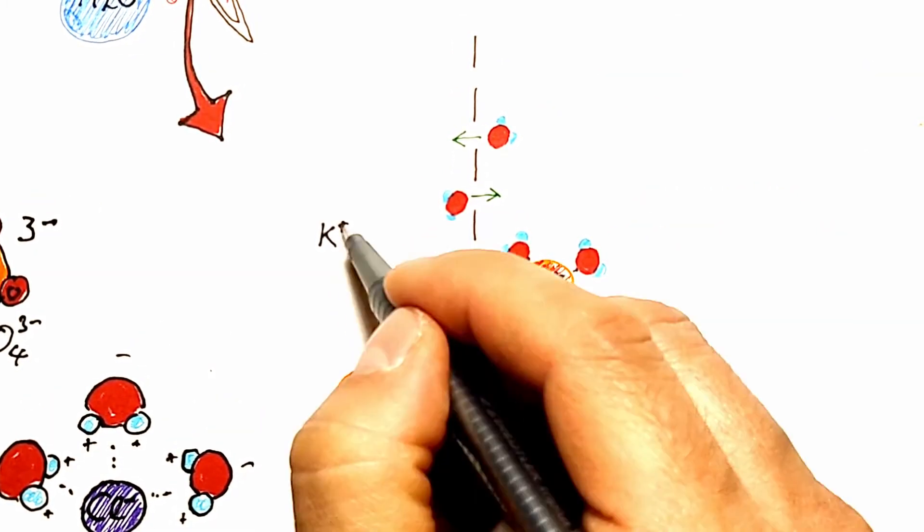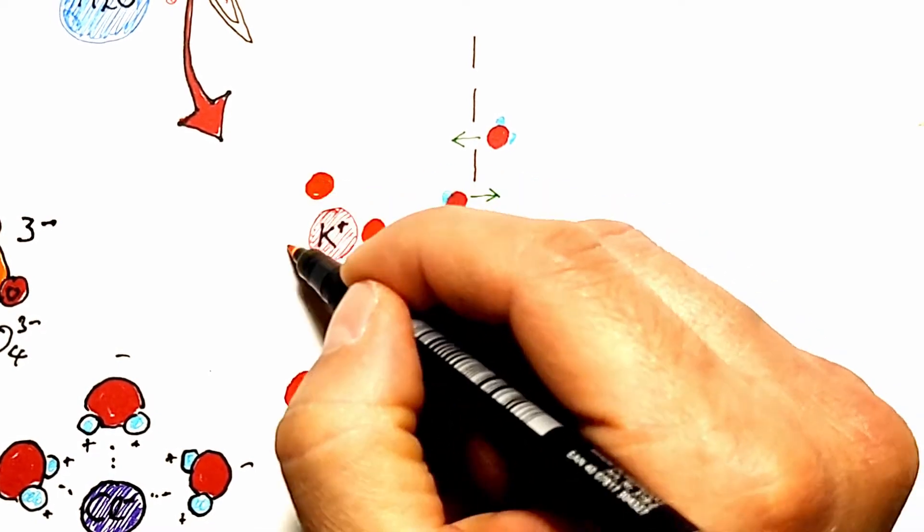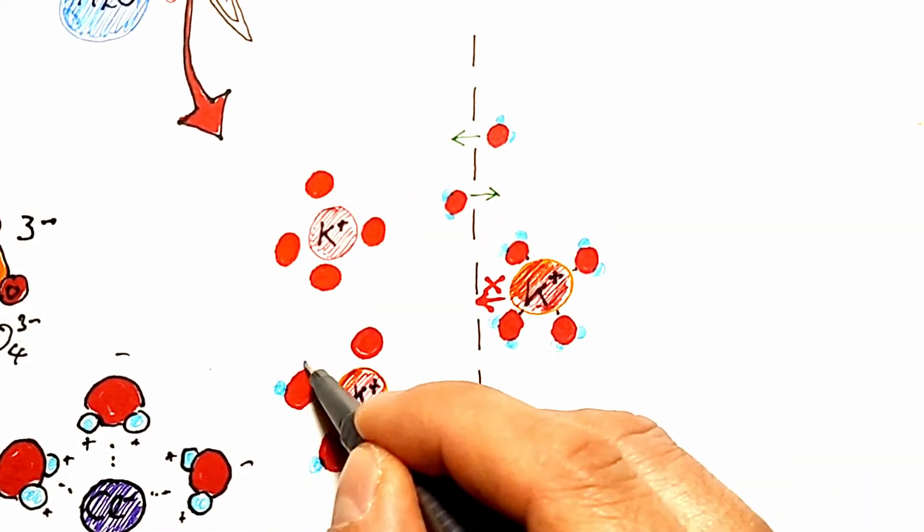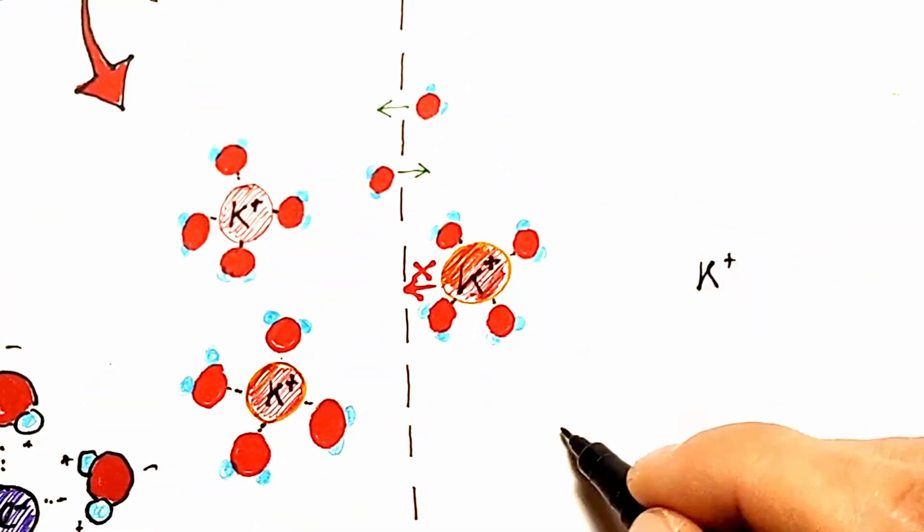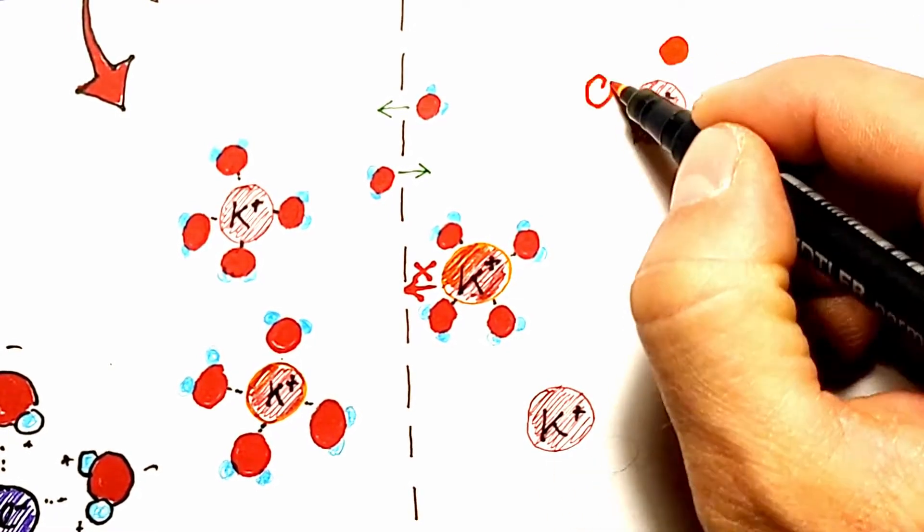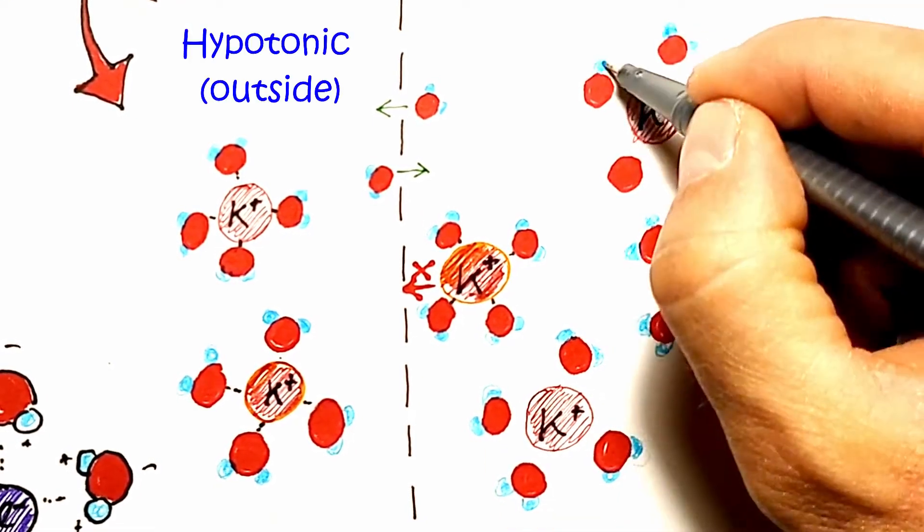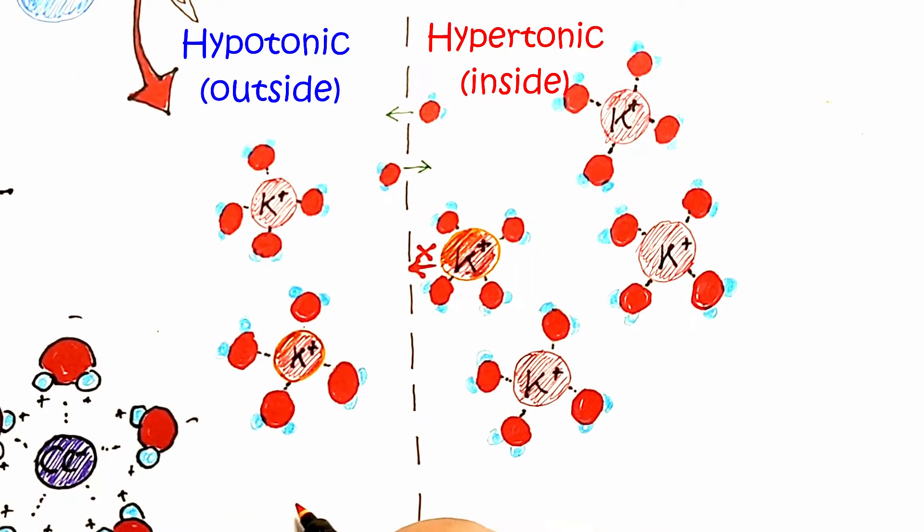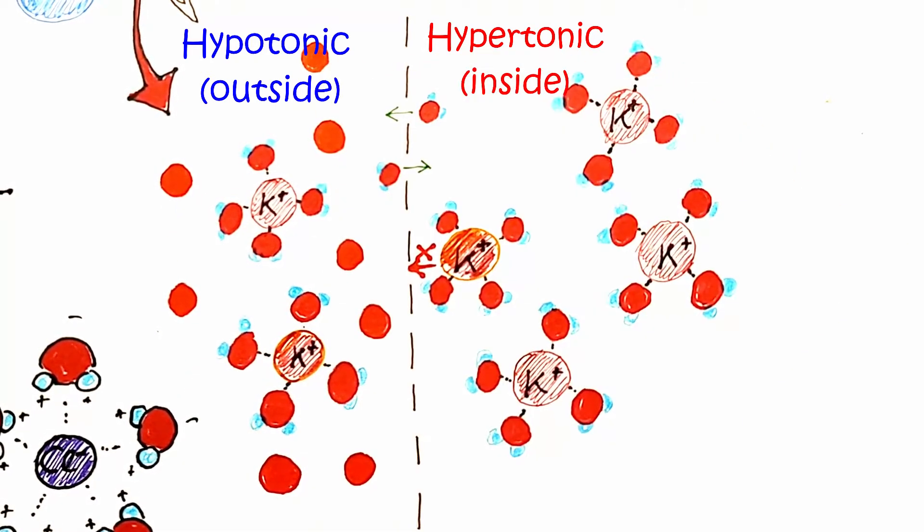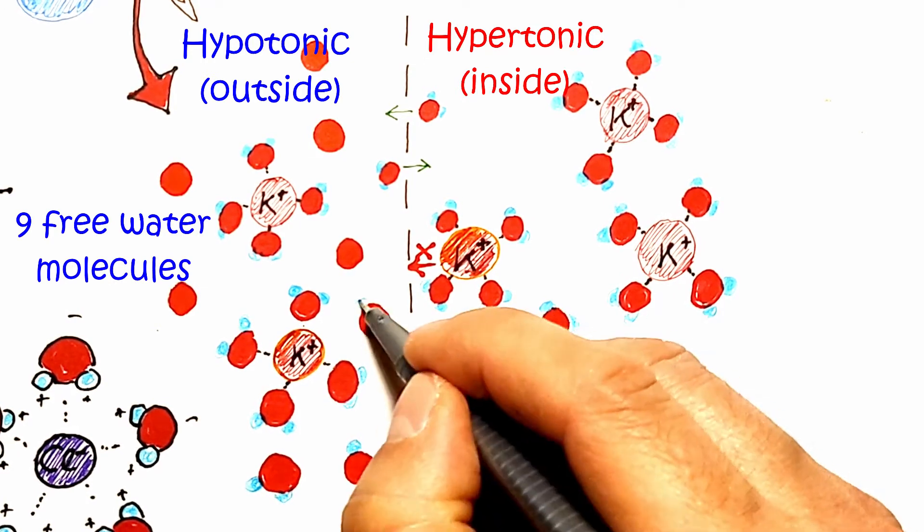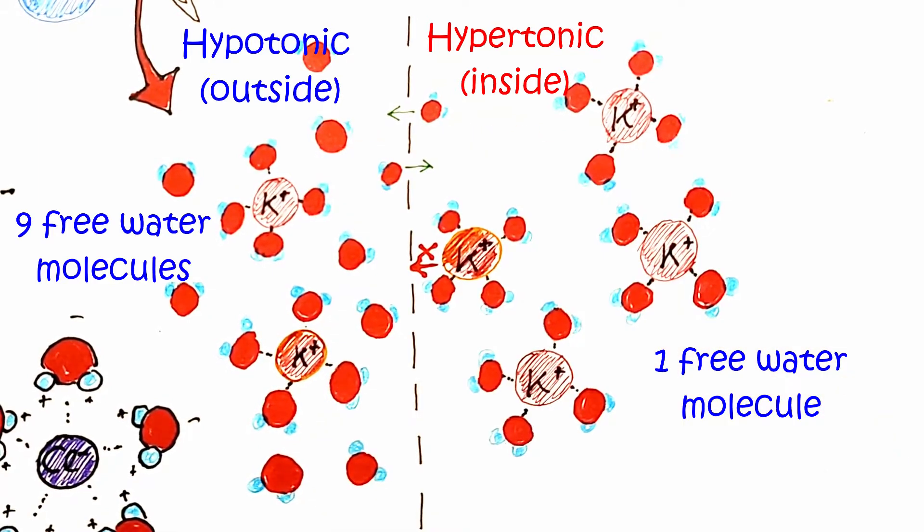The more solutes there are in a water solution, the more water molecules are bound to them, and therefore unable to move through the membrane. On the left side of the membrane, that is, outside the cell, there is a smaller number of potassium ions, more precisely only two. On the right side, that is, in the cell, there are four potassium ions, which means twice as much, which makes the inside of the cell hypertonic in relation to the outside. The number of water molecules is the same on both sides, to be more precise, 17 on both sides. However, there are nine free water molecules on the left side of the membrane and only one on the right, because the others are bound to potassium ions.